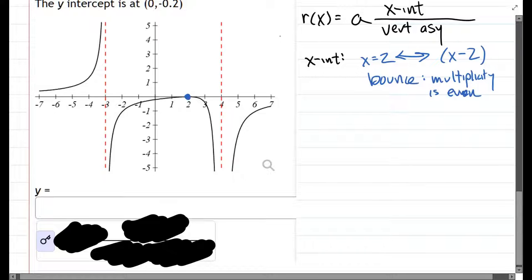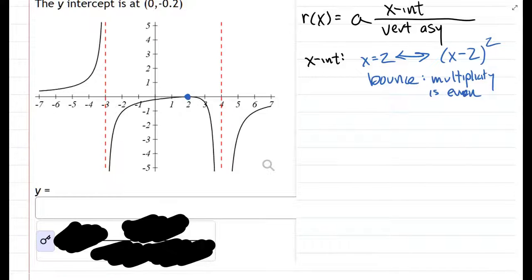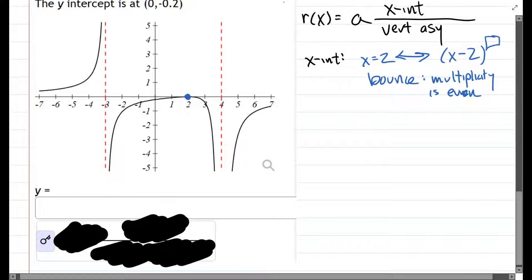Most likely that means the power is going to be two. However, it could be four or six or eight. But we're going to see very soon when we look at the end behavior what goes in there. So inside that box is going to be an even number. There's only one x-intercept here.